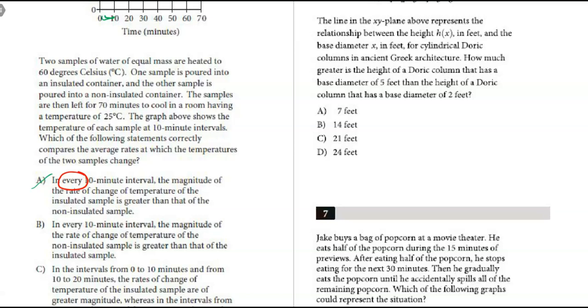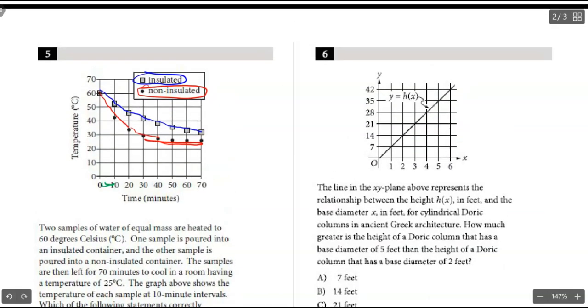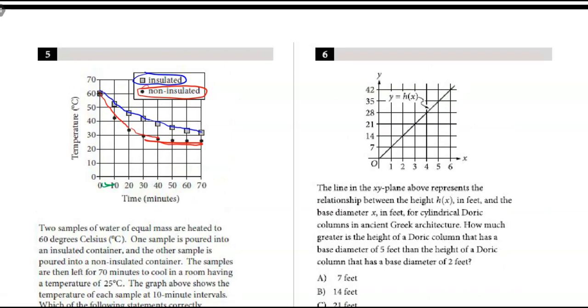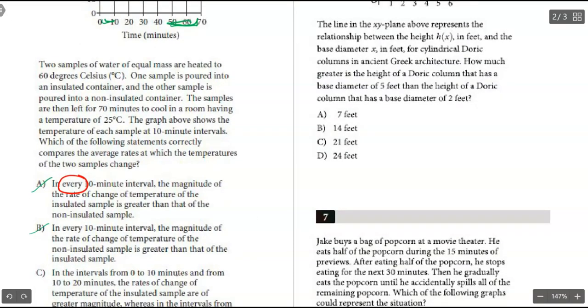Part B says in every single interval the magnitude of the rate of change of the non-insulated is greater. Well, I think over here when you look at these intervals, the non-insulated is pretty flat. There's not much change. There's actually more change up here on the insulated, so I think that one's out.